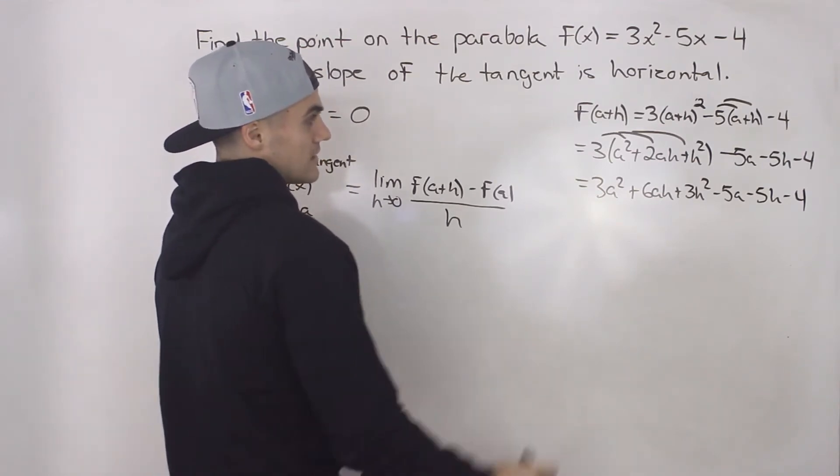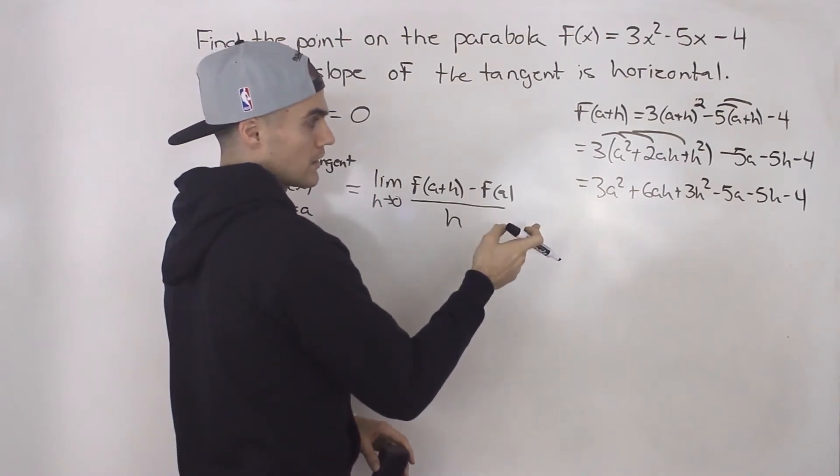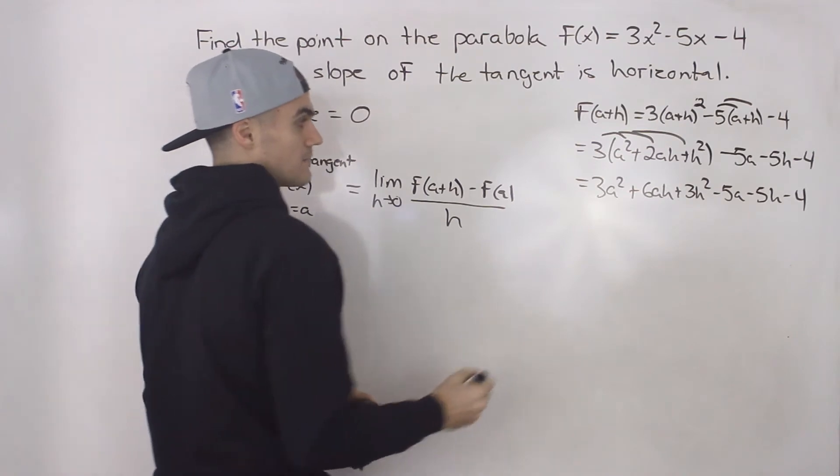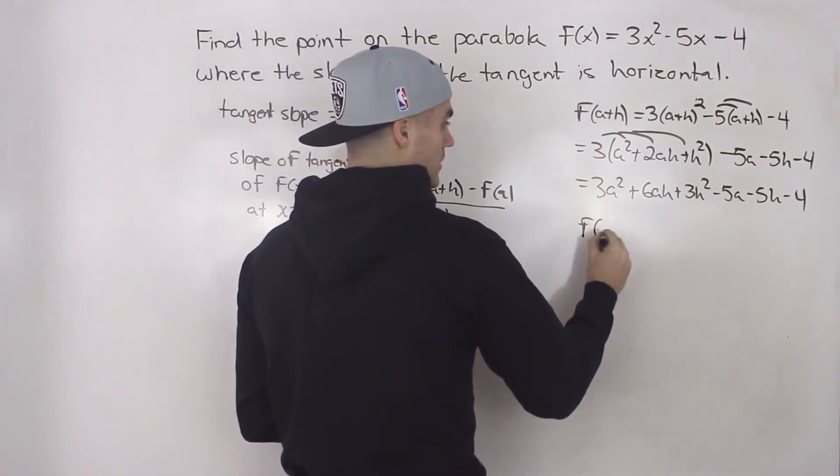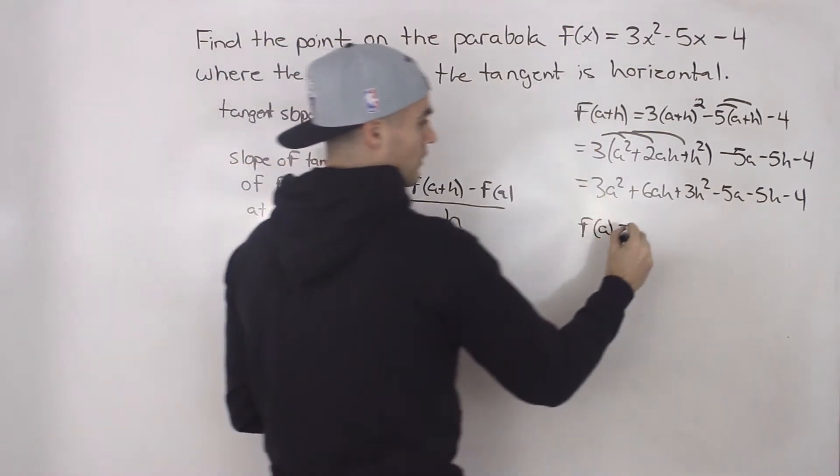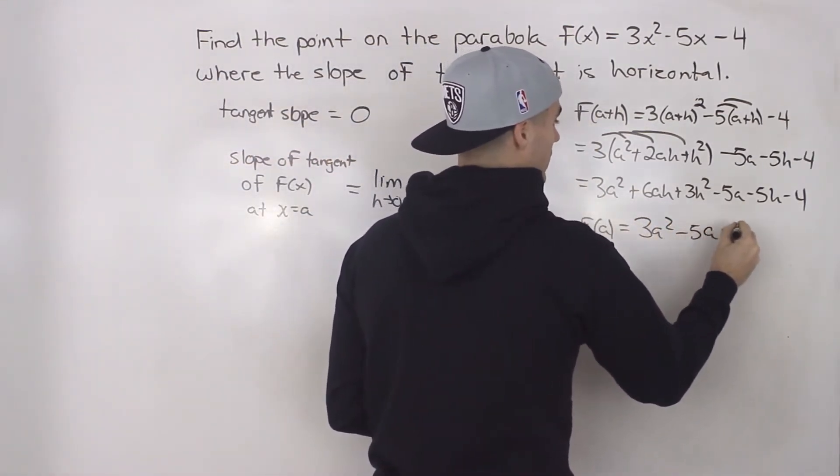So that is the expression for f(a + h). Notice that there's no common or like terms that we can simplify, so we just leave it like that. And then what's f(a) going to be? Well, f(a), we just plug in a for all the x values. It'll be 3a² - 5a - 4.